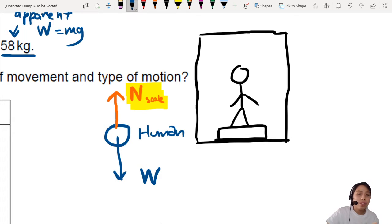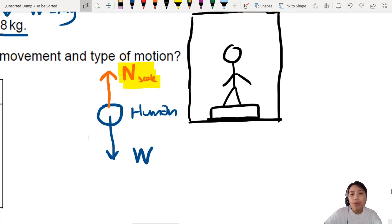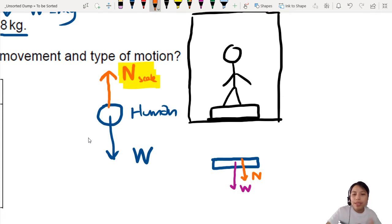So this is one free body diagram for the human. If you want to draw a free body diagram for the scale, it's going to look a little different. So the scale is here. You're going to have the weight of the scale. You will have the contact force from the human stepping on the scale, the legs pushing on the scale. And you have one more, which is the contact force from the elevator on the scale.